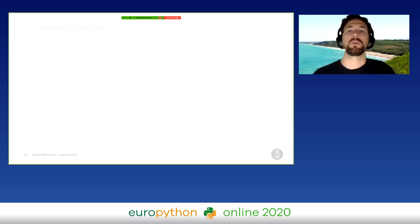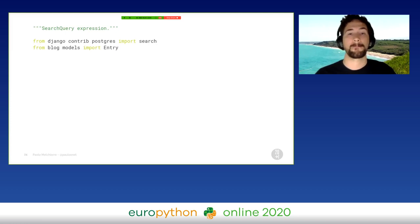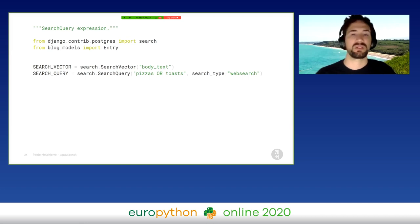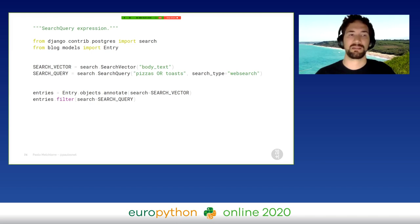To search using more complex text, we can use the SearchQuery expression. We can also use common search syntax directly in the query text using the web search type. After that, we can search for two words at the same time, having potentially more results.